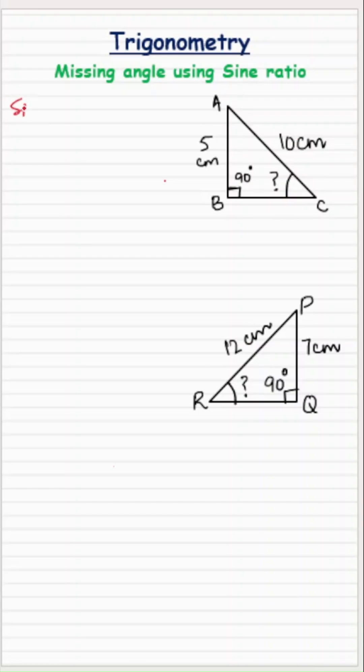So we know that sine of any angle, in this one angle C is missing. So sine of angle C will be the ratio of opposite side to hypotenuse. Now we will fill in the values.